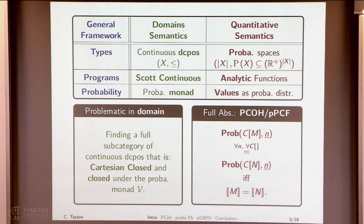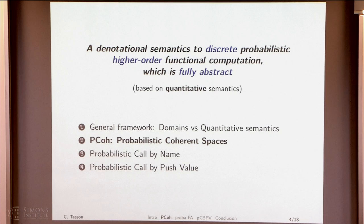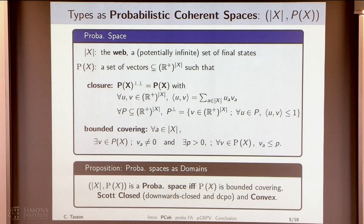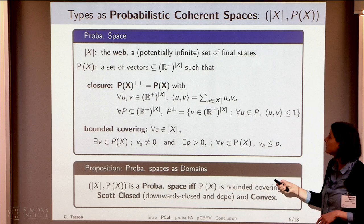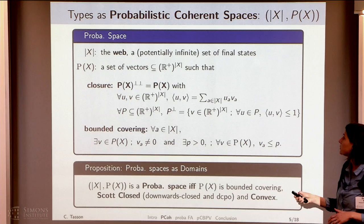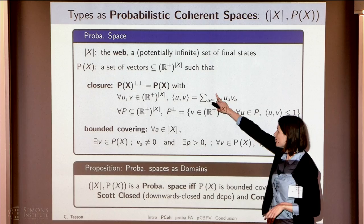Now we have the general framework. We can move to more details on the semantics. We first define the objects of my category, which are probabilistic spaces. As I said, we have the web, which will be the indices of our vectors. And we have a convex space, which is a set of vectors with positive coefficients. We ask two things: the closure condition, and what I call the bounded covering.